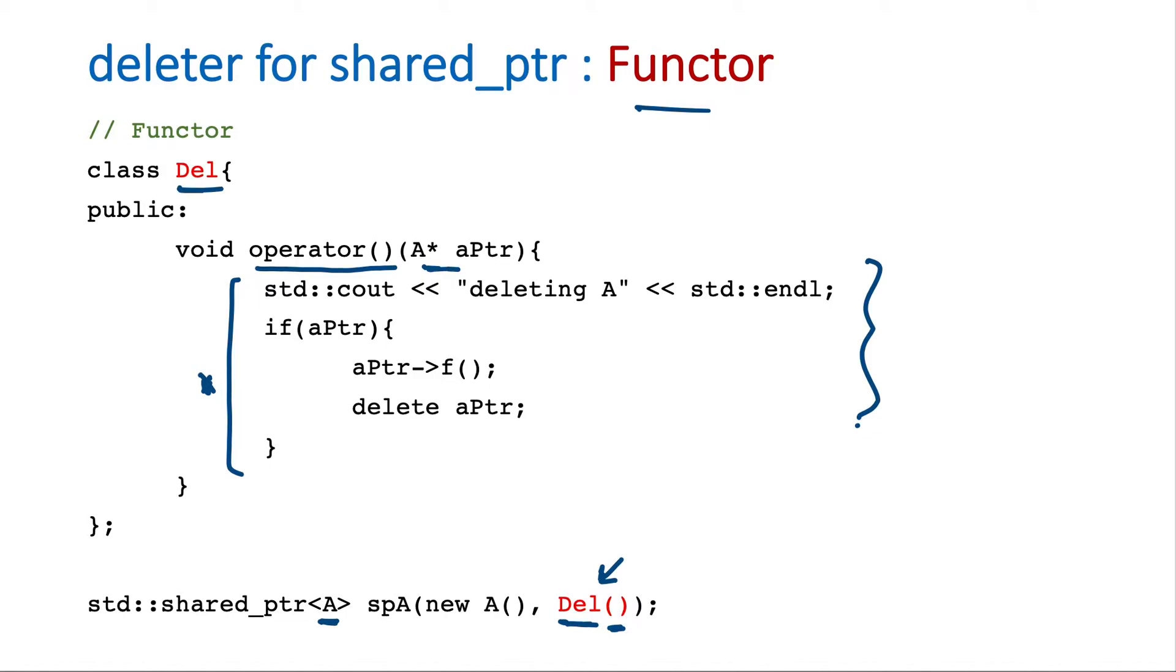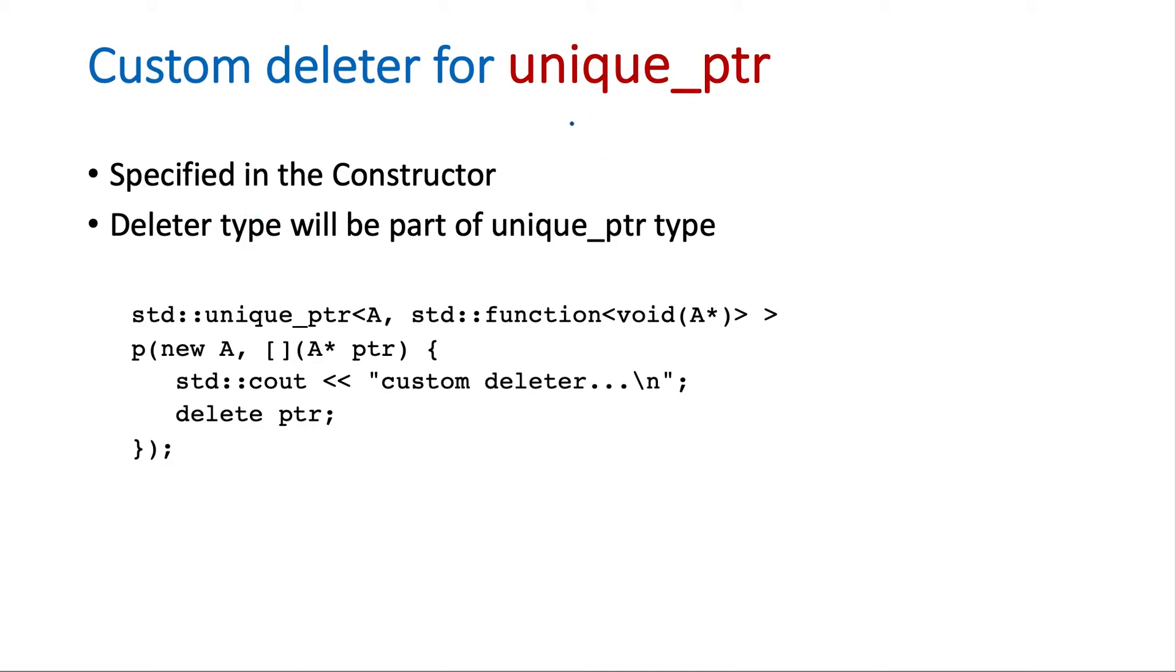So these are the three cases for shared pointer. Now let's see how we will call the custom deleter for unique pointer. So here also we will specify it in the constructor. But here the deleter type, the type of the function will be a part of the unique pointer type. So in earlier cases we just used this unique pointer and then the type of pointer and then we created the pointer. So here this is additional. So we specify the type of deleter.